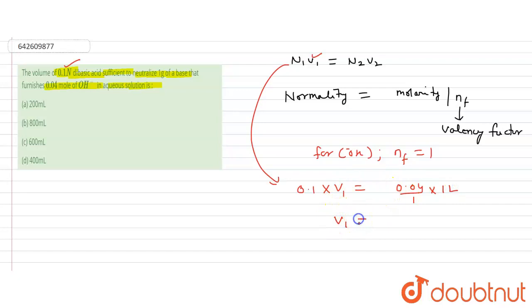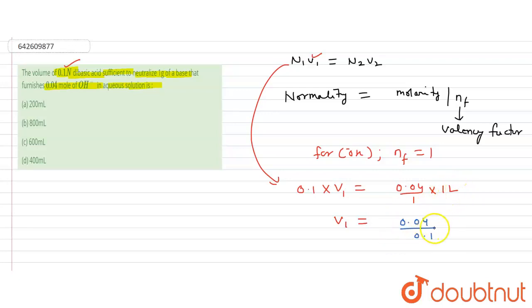Now we can calculate the volume easily. Substituting into N₁V₁ = N₂V₂: V₁ = 0.04 divided by 0.1, which gives V₁ = 0.4 liters.